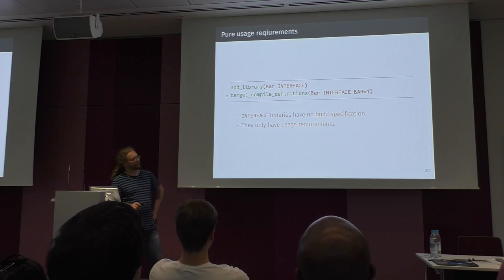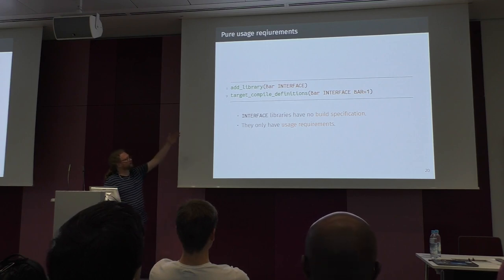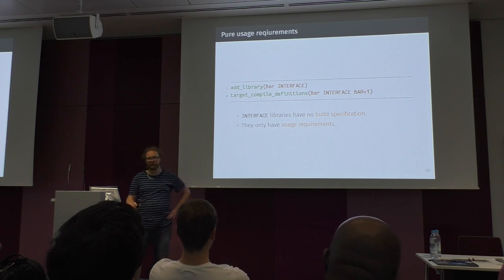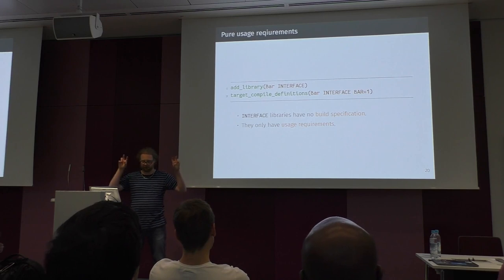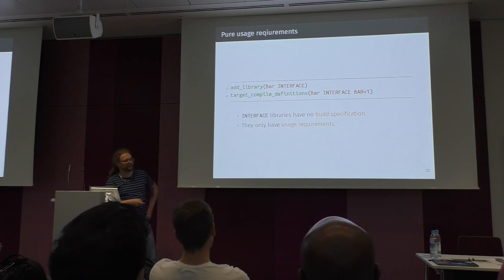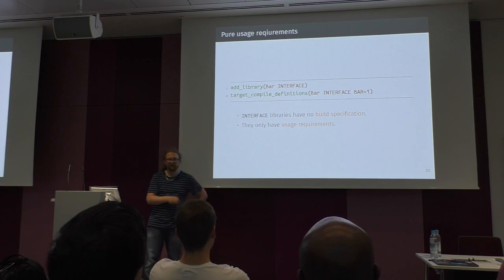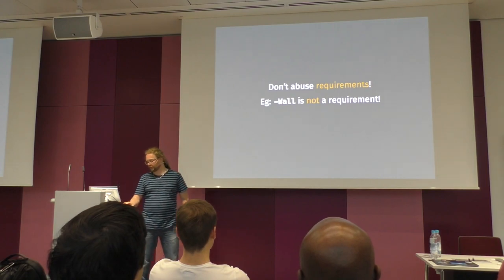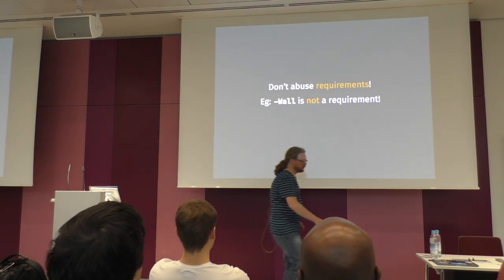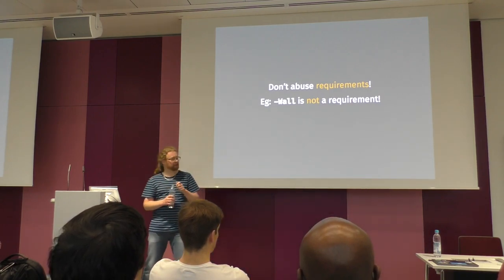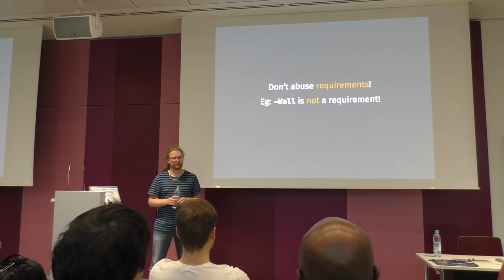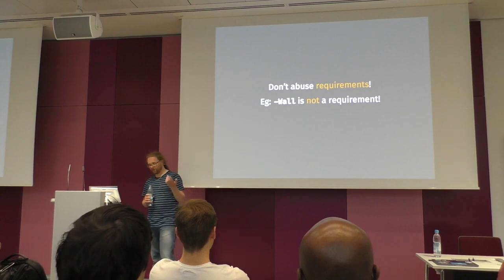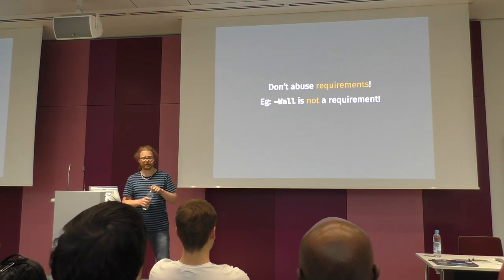You can also have targets that act as pure usage requirements — the library type INTERFACE. We create a library, give it the type INTERFACE, set some compile definitions, and whenever someone links against it, it will not actually link but just propagate those usage requirements. One note: don't abuse usage requirements. Use them only when something is really a requirement. For example, -Wall is not a requirement — the code compiles fine without that compile flag.